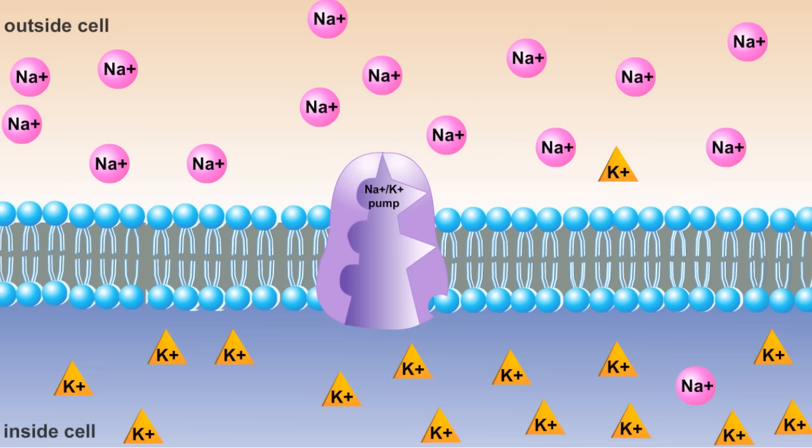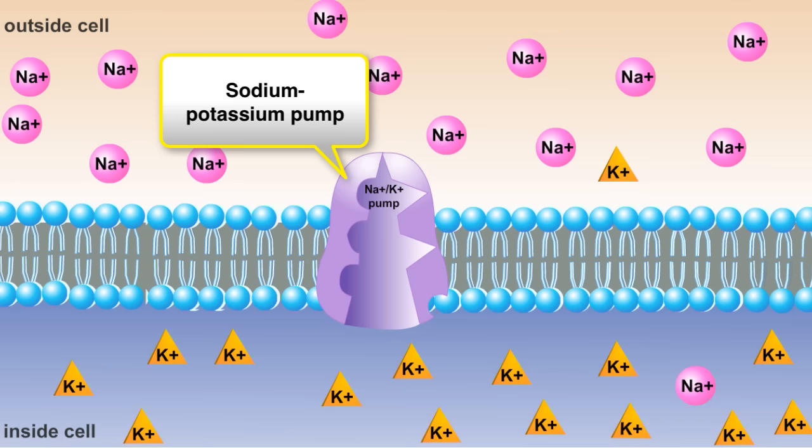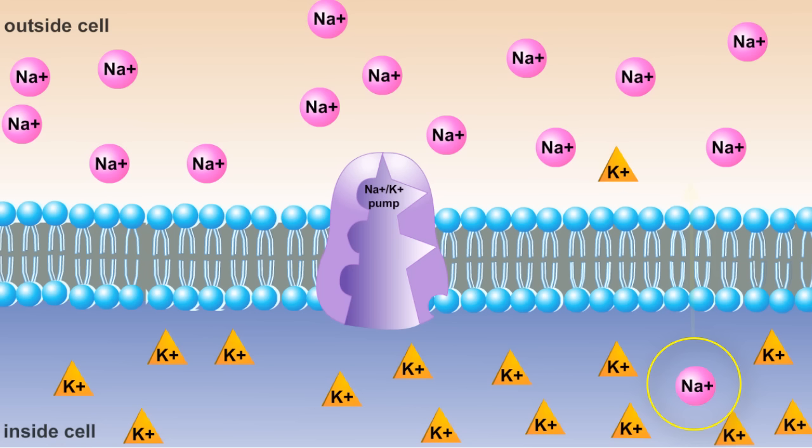One of the more common examples of active transport is the sodium-potassium pump. The job of the sodium-potassium pump is to move sodium ions, or Na+, out of the cell and potassium ions, or K+, into the cell. Let's take a closer look at how this happens.